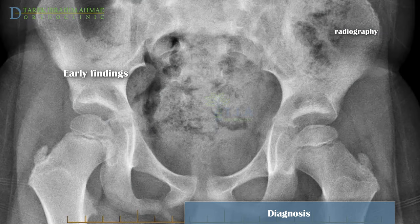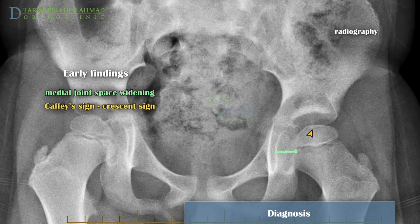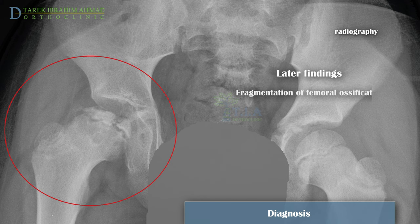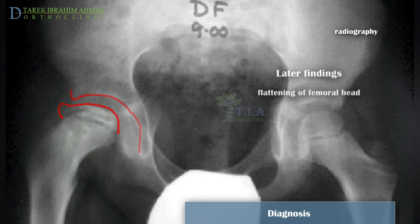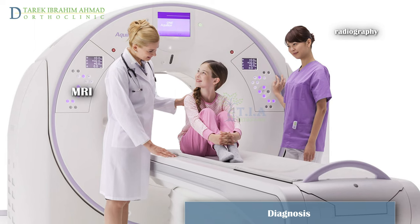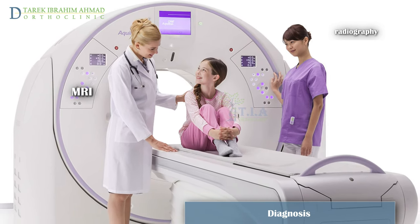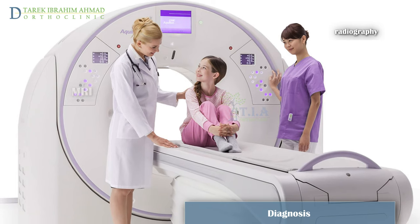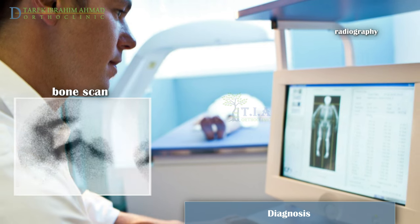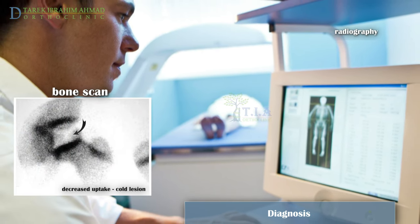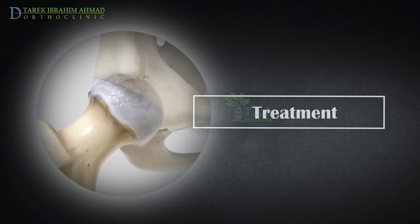Early findings on plain radiographs include widening of the joint space, the Caffey sign, or the crescent sign, which is a subchondral radiolucent fracture line parallel to the articular surface of the femoral head — this sign may be visible prior to the fragmentation stage. Later findings include fragmentation of the femoral ossification center, lateral subluxation, and flattening of the femoral head. MRI can visualize bone damage more clearly than x-rays. A bone scan may be used if diagnosis is in question, revealing decreased perfusion to the femoral head.